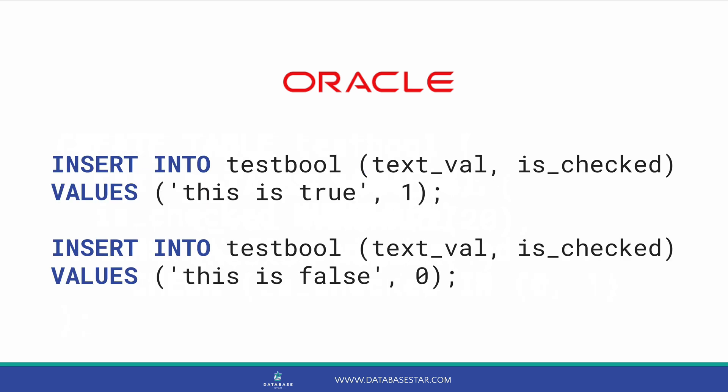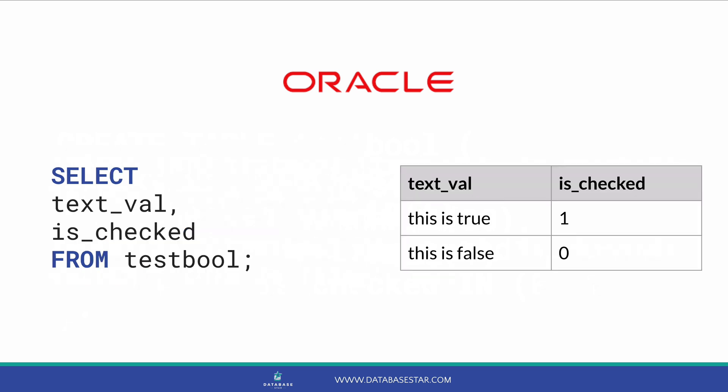Here are some valid insert statements. We insert a value of 1 for true and 0 for false. We can select from the table like this and see the results. Using a number as a Boolean is simple. What about using a character column, such as varchar2 or char? I'll explain that solution and why I don't recommend it later in this video, because it applies to all databases.